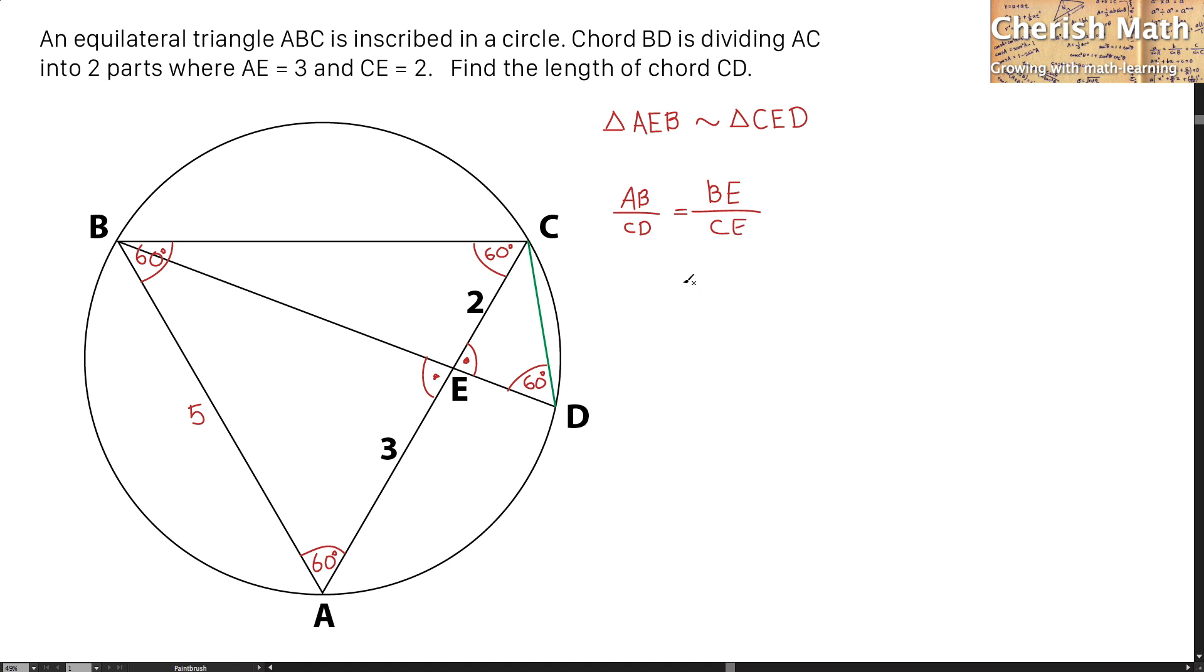Now I will be substituting the value here: AB is 5, and the unknown value of CD equals the line BE which is still unknown and the line CE which is at 2. At this point, the crucial part is to find the value of BE.